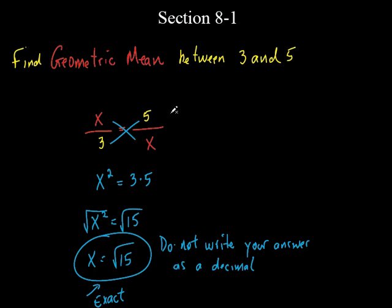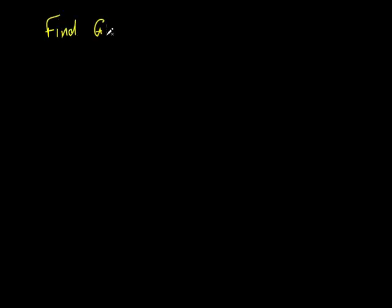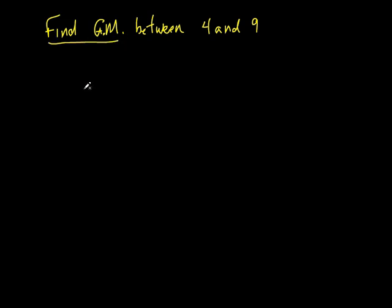So if I asked you to find the geometric mean between two numbers, that's exactly what you would do. Let's do another problem. Find the geometric mean — I'll put 'gm' — between four and nine. So if it says find the geometric mean, how are we setting this thing up? It's a proportion — a fraction equal to another fraction.